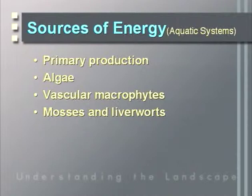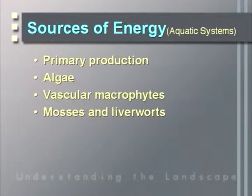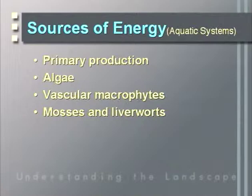In an aquatic system, inside the stream, we find several sources of energy: primary production by algae, the microscopic plants covering every wetted surface, the vascular macrophytes growing in the stream, and the mosses and liverworts.